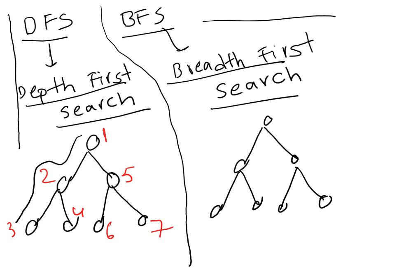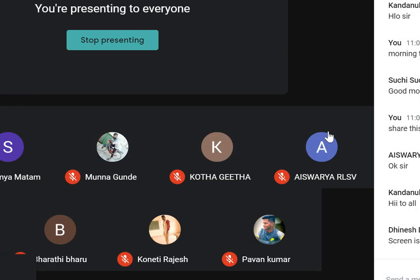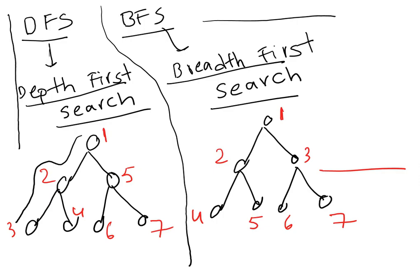In depth first search, first it searches the root, then left of this node, then right of this node, then left of node 2, right of node 2, and so on through nodes 6 and 7. In BFS the search is horizontal. DFS is vertical, BFS is horizontal — you can see the numbering: 1, 2, 3 going vertically versus 1, 2, 3 going horizontally.